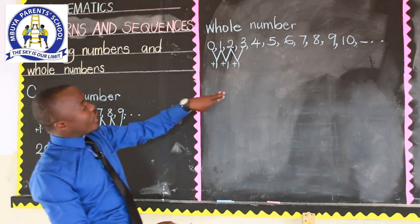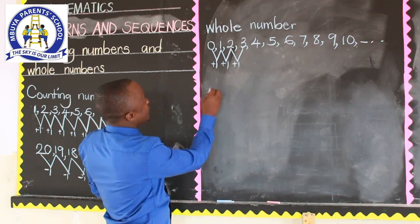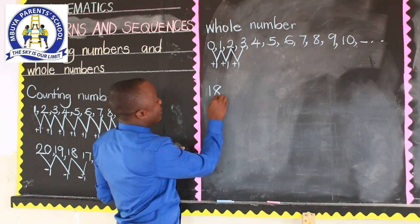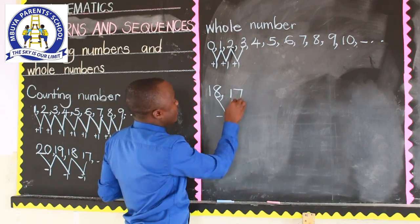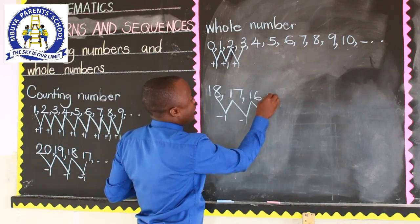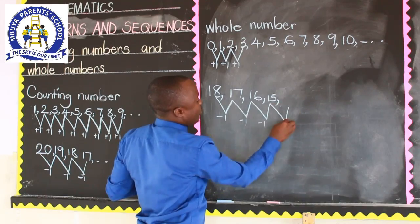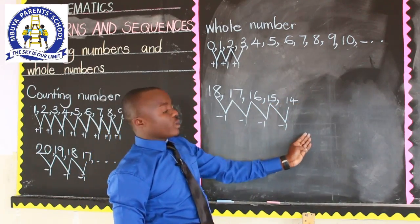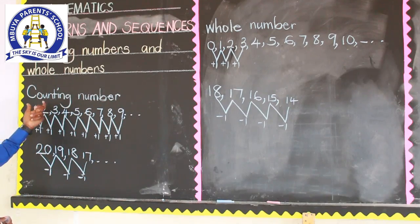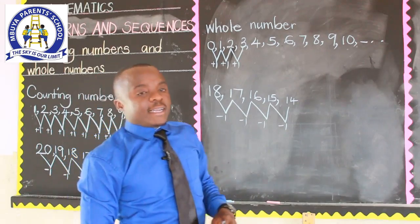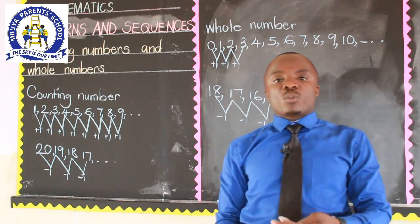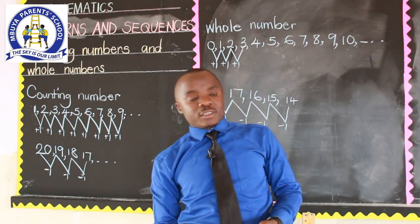If it is in descending order and we start with, let's say, 18, to get the next whole number in descending order we shall subtract one to get 17, then subtract one to get 16, subtract one to get 15, subtract one to get 14, and so on. Having looked at counting numbers and whole numbers, let us see how we can answer some questions related to counting numbers and whole numbers.